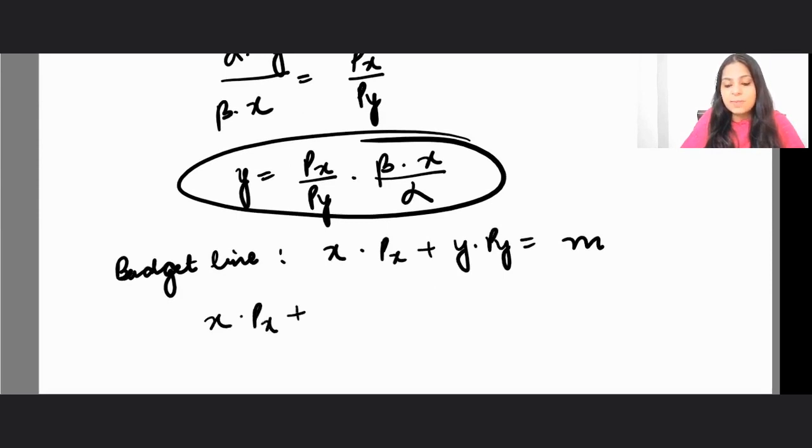So I can write this as x times px, plus instead of y right here I can go ahead and replace it by this value. So instead of y I can go ahead and write px by py times beta times x by alpha times py equals m.